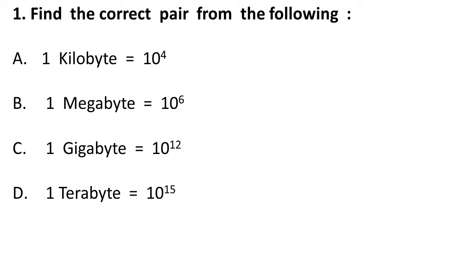The question is: identify the correct pair from the following. One kilobyte — it is not one thousand, so it is incorrect. Option C: one gigabyte means one billion, which has nine zeros, so it should be 10 raised to 9 — option C is wrong. Option D: terabyte means trillion characters, so it should be 10 raised to 12 — also wrong. But megabyte is 10 raised to 6, which means one million — so this is correct.